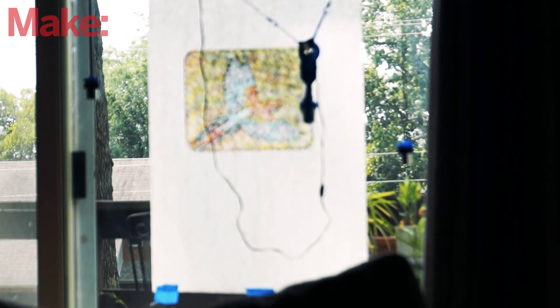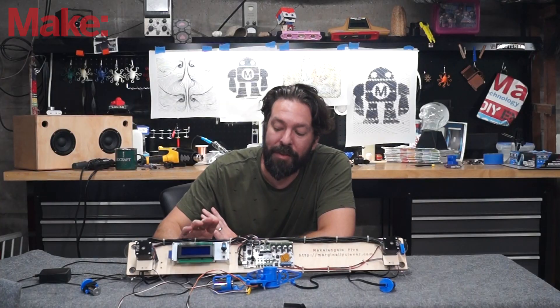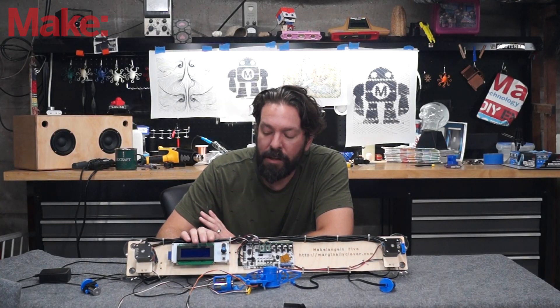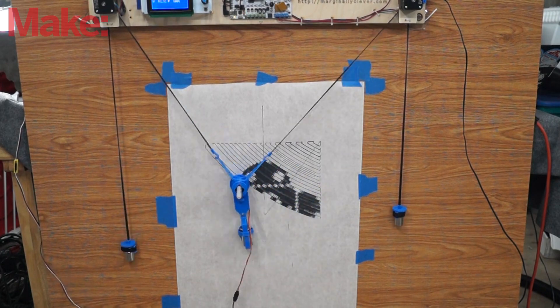You can operate this from the computer and the software that you can get from Marginally Clever Robotics or you can drop your files onto an SD card and operate it off of the built-in interface here on the front of the machine. That's especially nice if you're doing it out in public and don't want to leave your laptop sitting there while it's operating.